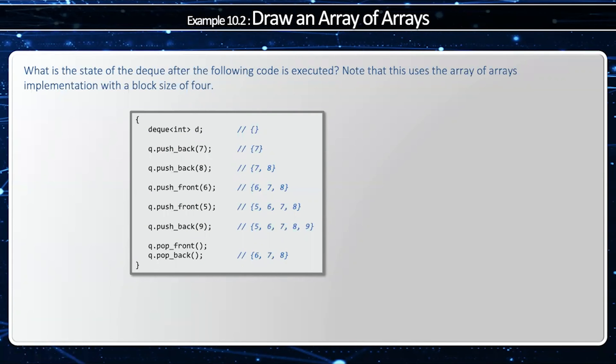To demonstrate how this works, we'll start with a deque of integers with block size 4. So when I push back 7, I need to create a block, and I'm only going to have one element on it, obviously element 7.